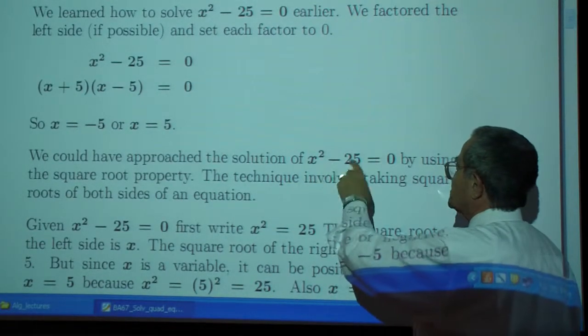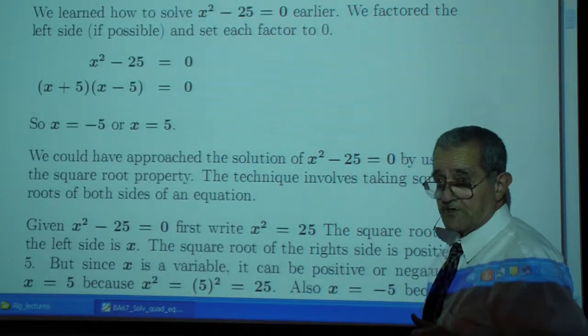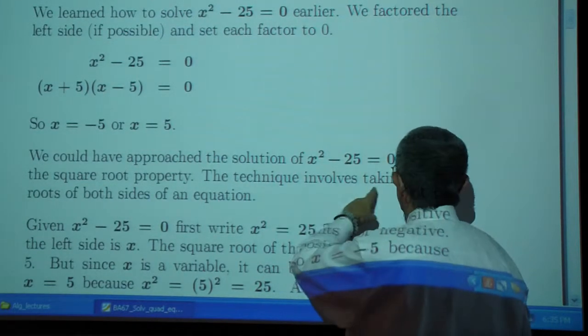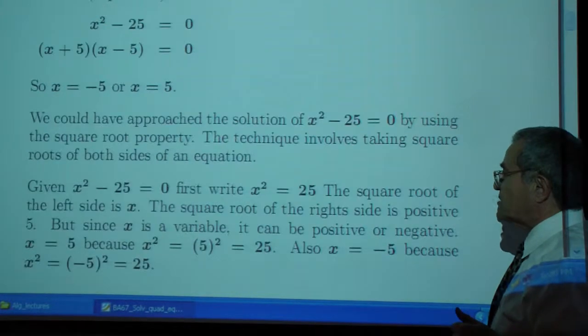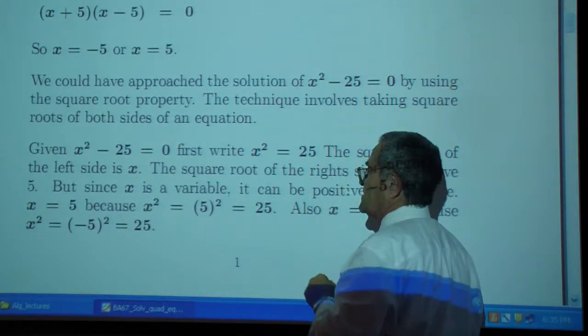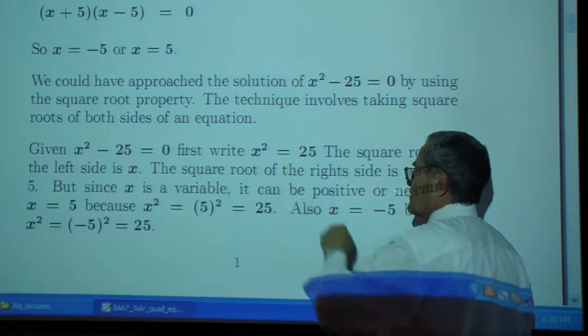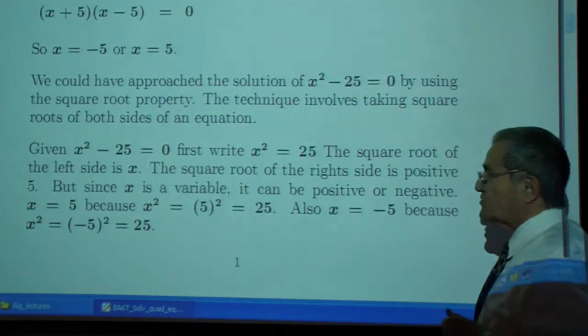Now we could have approached the solution of x squared minus 25 by using the square root property. The technique involves taking square roots of both sides of an equation. So you start out with x squared equals 25. You take the square root of the left side, you get x. You take the square root of the right side, which is 5.